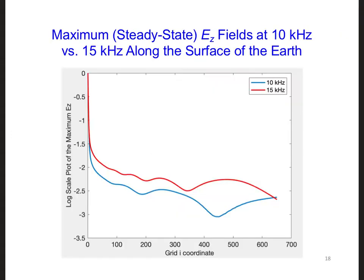Here is a plot of the EZmax fields along the surface of the Earth at 10 kHz and 15 kHz. In this plot, we can see that while there is a null at about 430 grid cells at 10 kHz, at 15 kHz there is a null around 330 cells, but not at 430 grid cells. In other words, it looks like we can deal with nulls if we periodically change the operating frequency of the transmitter.